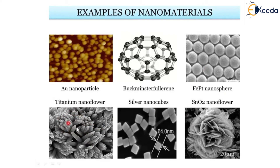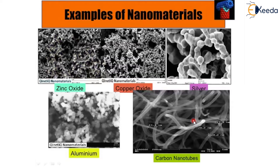Looking more closely at these nanostructures: the silver nanoflower becomes 64 nanometers in size, and the SnO2 nanoflower is shown at an unknown nanometer scale. Further examples include zinc oxide, copper oxide, and silver nanostructures.